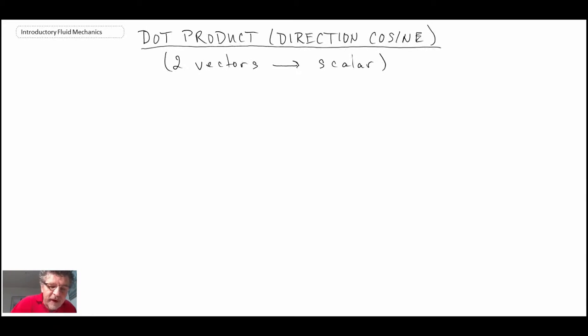So we're returning to our two vectors, a and b. So we would say a dot b. And we can express the dot product in the following way.